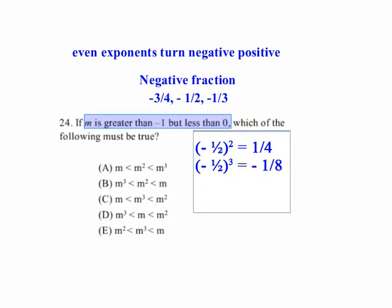When we cube negative 1 half, negative 1 half cubed is equal to negative 1 eighth. So if we set it up, we've got negative 1 half is the least.